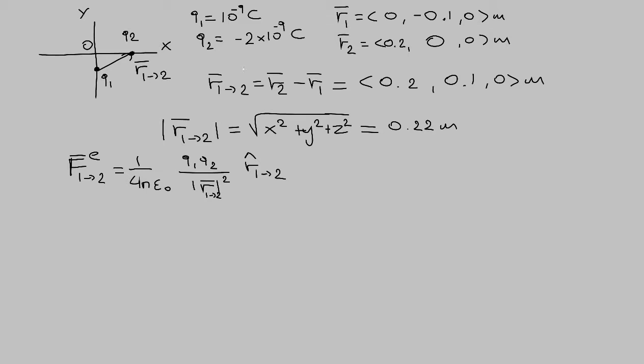In the previous video, we calculated the position vector that goes from 1 to 2 as the difference R2 minus R1 and then we found the magnitude of that vector.